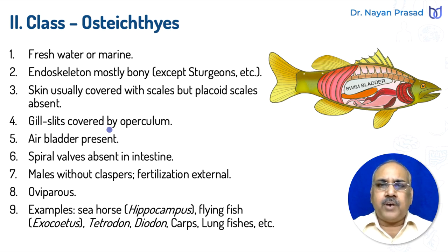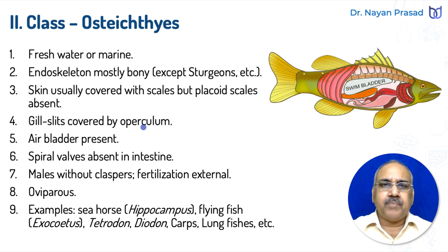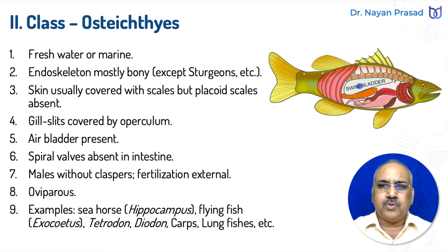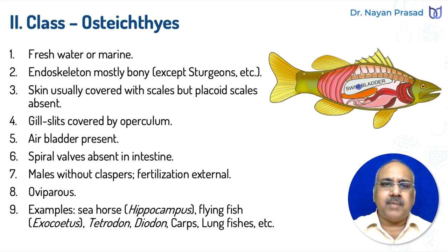Gill slits are covered by an operculum — the gill cover — so the gills lie inside. Remember, in cartilaginous fishes the gill cover is absent. Air bladder is present in bony fishes: it is an air-filled, balloon-like structure inside the body. By regulating the amount of air, fishes can swim at different levels. However, spiral valves are absent in the intestine of bony fishes; spiral valves are present only in cartilaginous fishes.